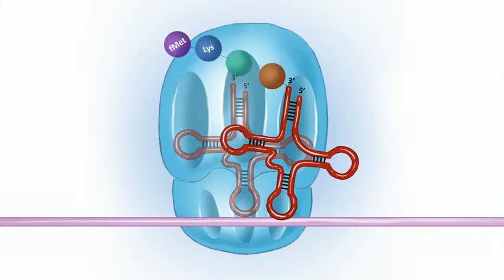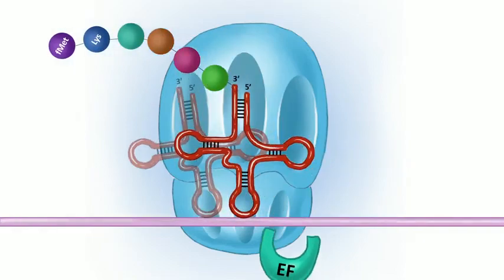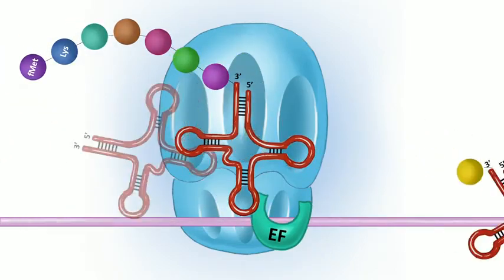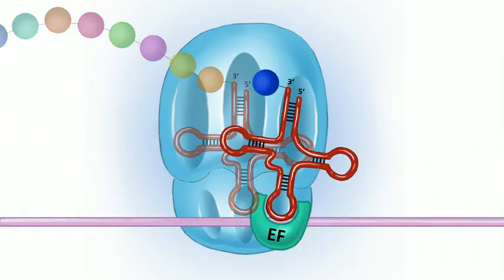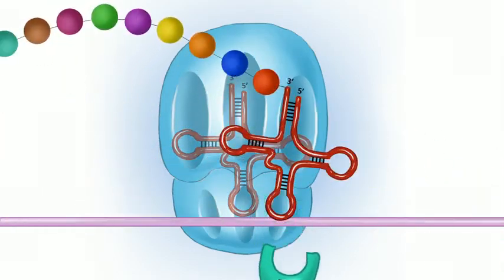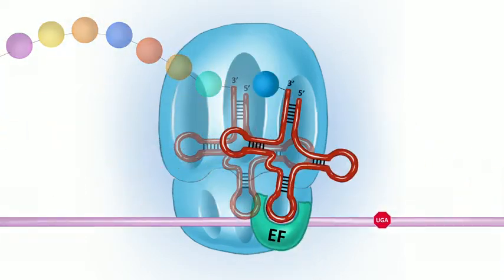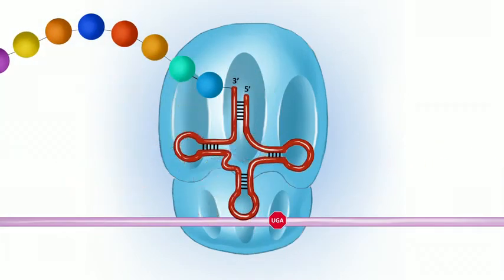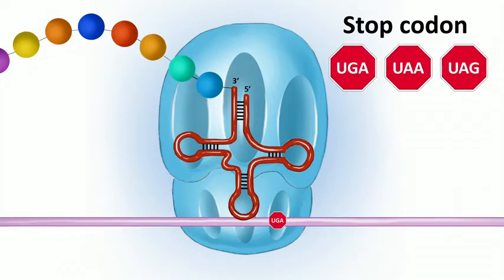Elongation just keeps going as long as there's mRNA code to translate. The new aminoacyl-tRNA comes in at the A site, the 23S rRNA peptidyl transferase moves the polypeptide chain from the P site tRNA to the A site tRNA, and the whole thing slides over one spot and starts over — as long as the mRNA codon at the A site is valid.